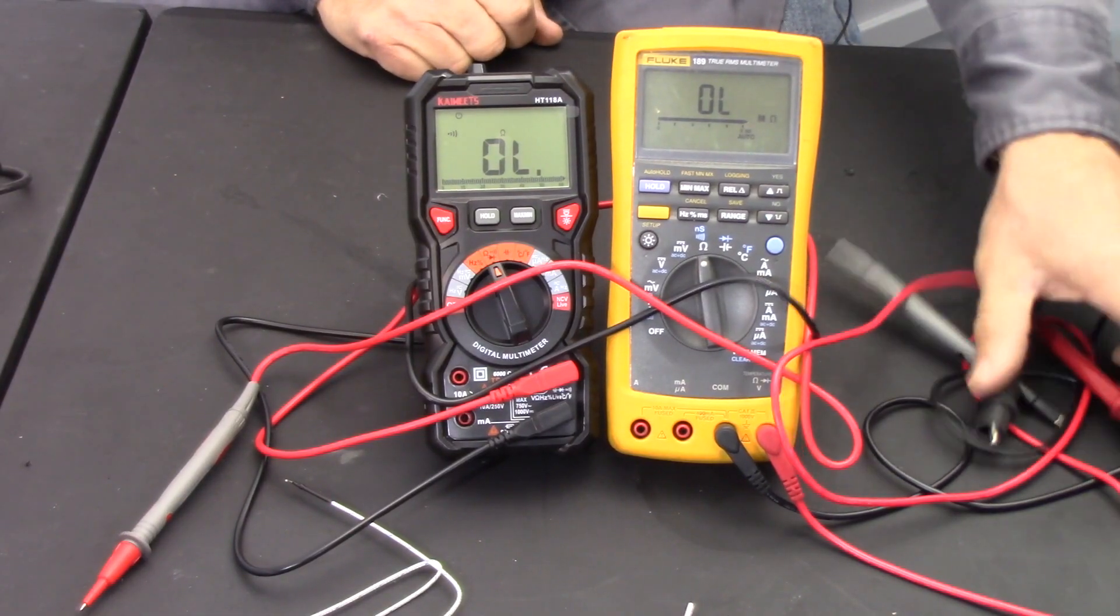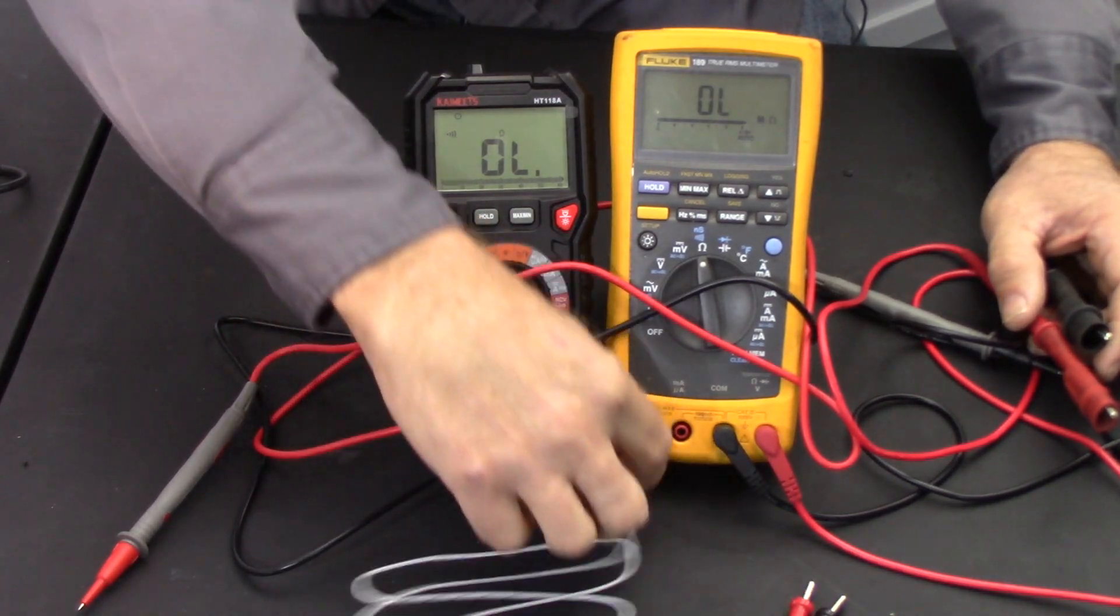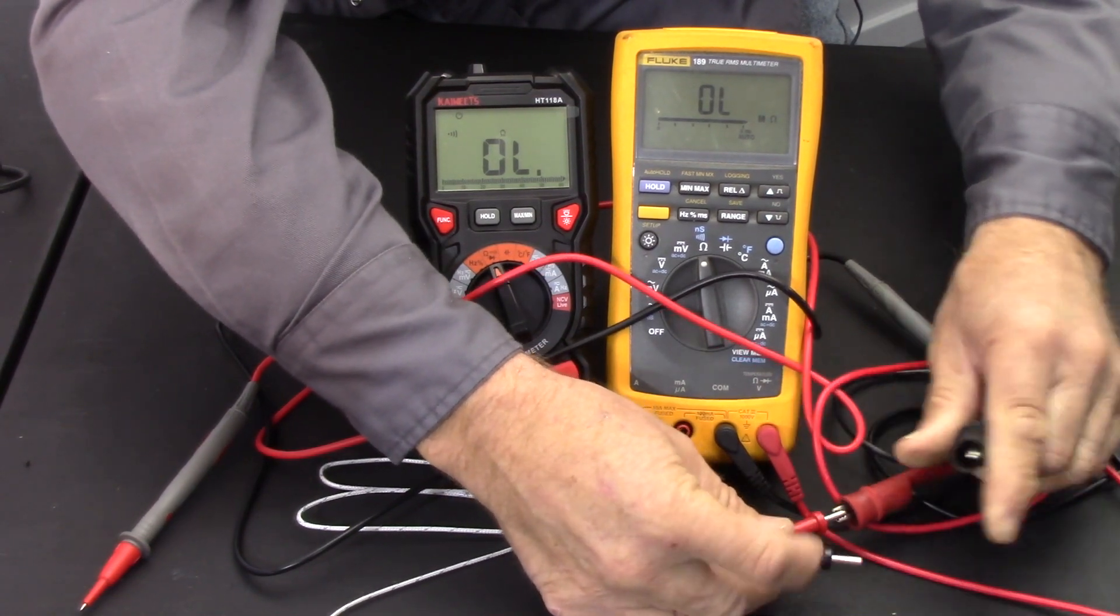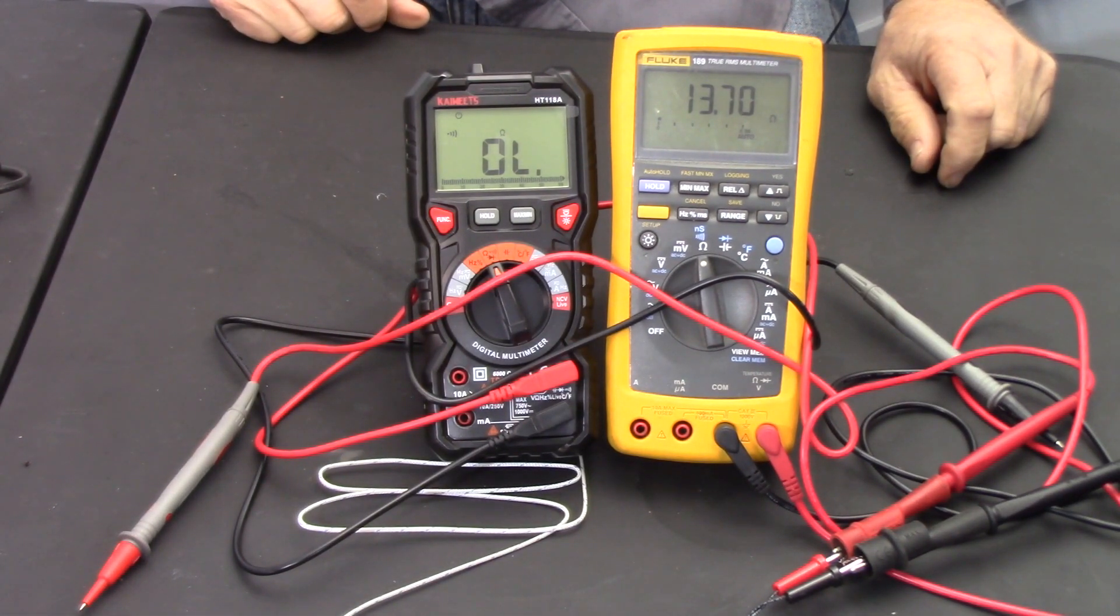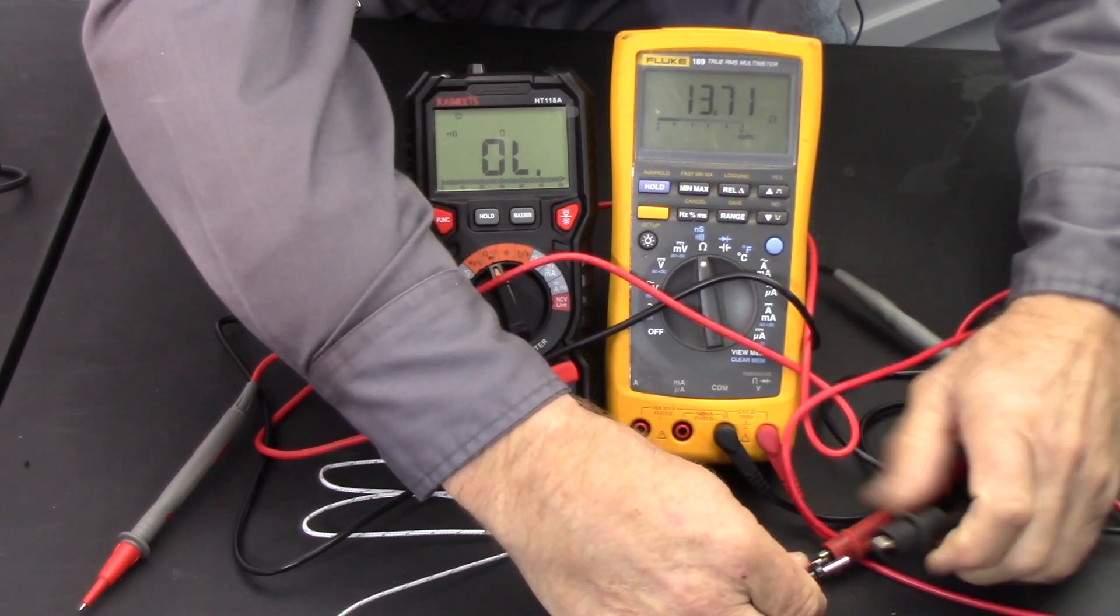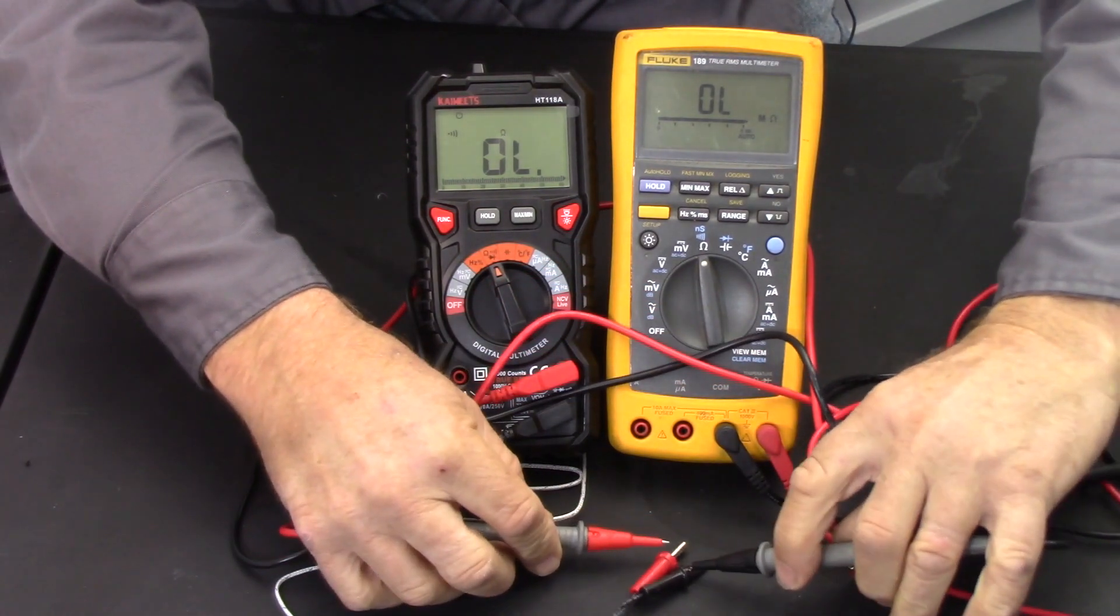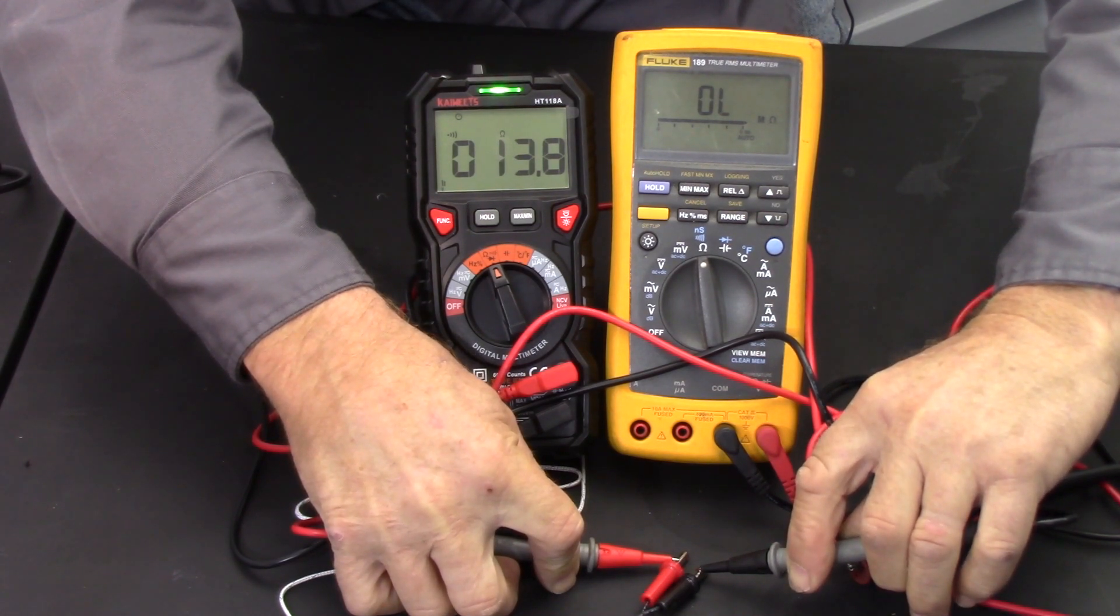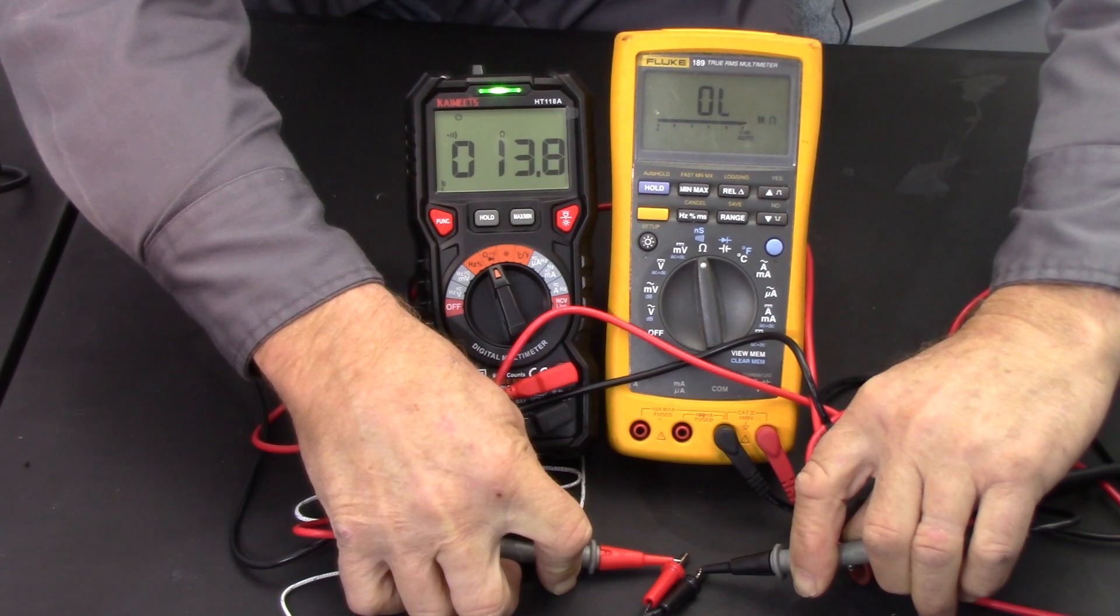Now we'll check the two meters on resistance. What I'm going to use here is the resistive temperature device that came with the Kaiwits meter for measuring temperature. We'll check that with the Fluke, see what the reading is. Setting our meters to the ohms scale. On the Fluke we have 13.7, bouncing around 69, 13.68, right in that range. Now we'll check the Kaiwits. There it levels out to about 13.8, 13.7. Basically again as accurate and comparable to the Fluke 189.